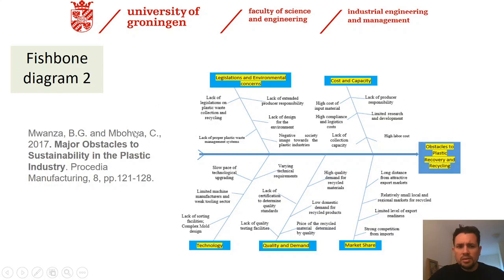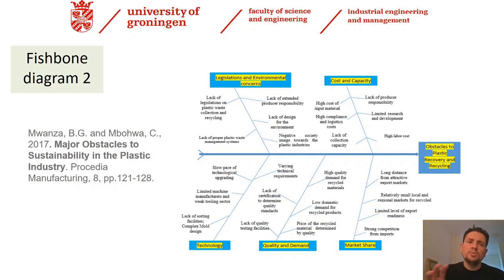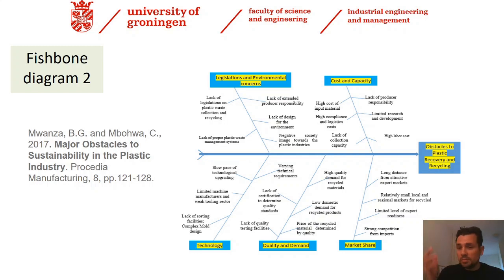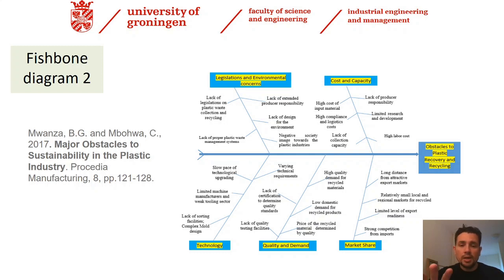The second example is a fishbone diagram from Procedia Manufacturing. Here we have a different type of name for the main bones: legislation, cause and capacity, technology, quality, and demand. This means the fishbone diagram is not fixed to only five categories — it depends a lot on the problem you are addressing. This particular problem is connected to obstacles to plastic recovery and recycling, and it is one of the most cited papers using this technique, coming directly after brainstorming sessions and bibliography studies.